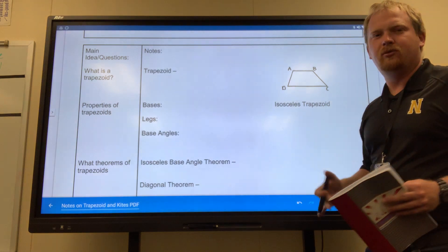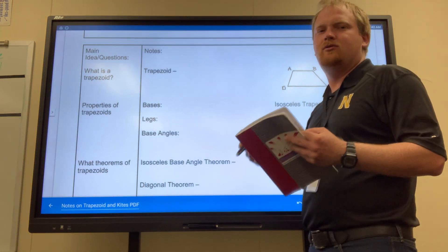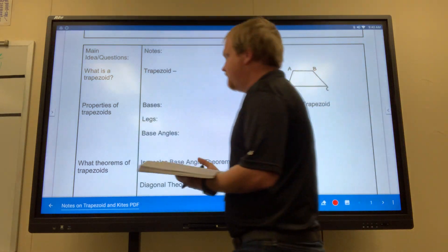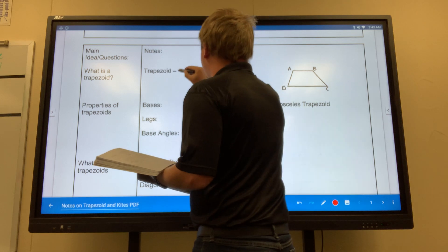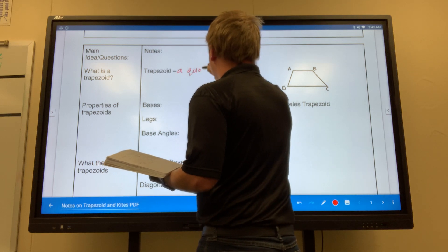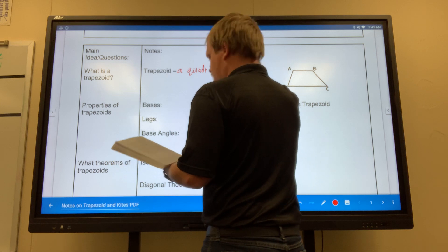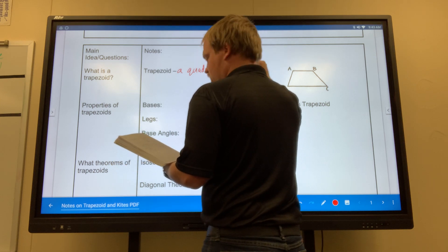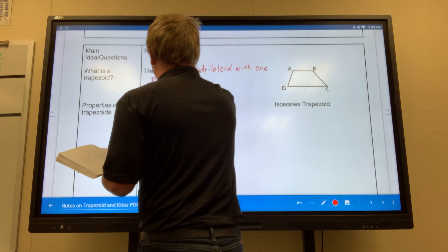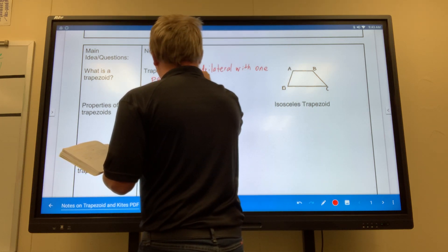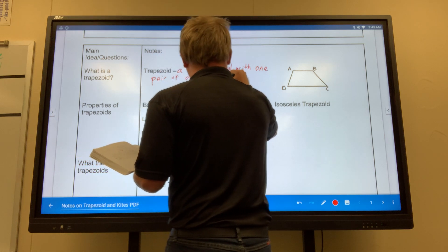So what is a trapezoid exactly? Well, you've probably seen it before, you probably know about it, but to be specific, it's a quadrilateral with one pair of opposite parallel sides.